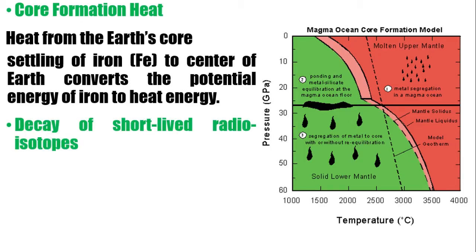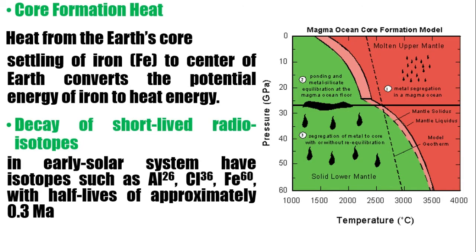Next, we have the decay of short-lived radioisotopes. In the early solar system, we have isotopes such as aluminum-26, chlorine-36, and iron-60. They have half-lives of approximately 0.3 million years. Take note of this because we also have long-lived radioisotopes.